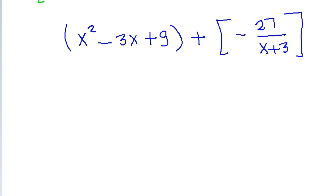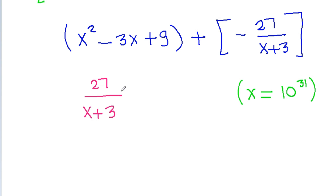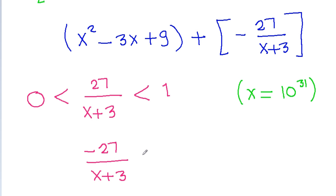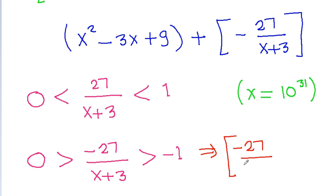Now, 27 / (x + 3) where x = 10³¹, so 27 / (x + 3) will be less than 1 and greater than 0. If we multiply by minus 1, then we get −27 / (x + 3) is greater than −1 and less than 0. So floor(−27 / (x + 3)) equals −1.